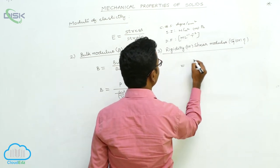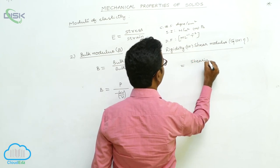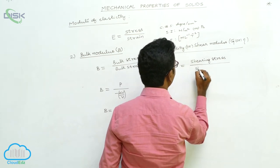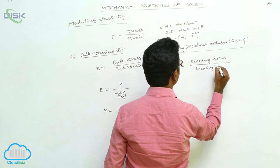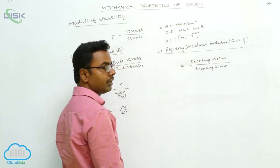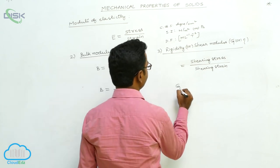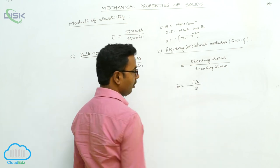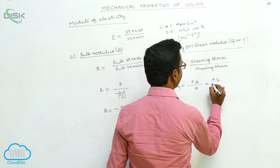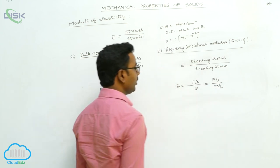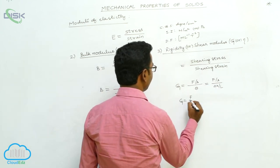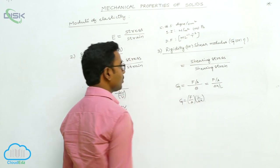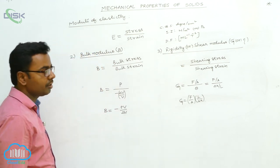The third modulus is the Rigidity Modulus or Shear Modulus, symbol G or η. It is defined as the ratio of shearing stress to the shearing strain. The formula is G = (F/A) × (L/Δx), where F/A is the shearing stress and Δx/L or theta is the shearing strain.